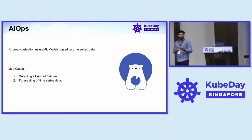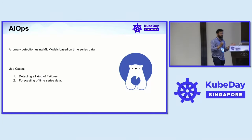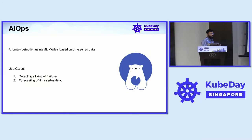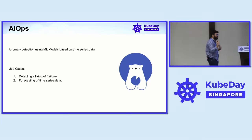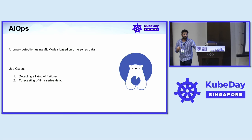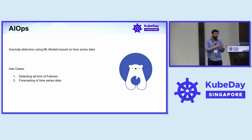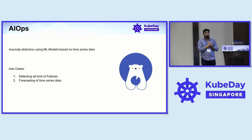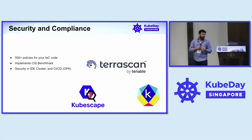The next thing we are currently exploring is AIOps. There is a tool called Numalogic, developed by Intuit. They have trained their ML models on historical data. It sends you real-time failure alerts — if a node is down or a pod is down. The Intuit team built it for forecasting as well. Right now we are just exploring the use case.